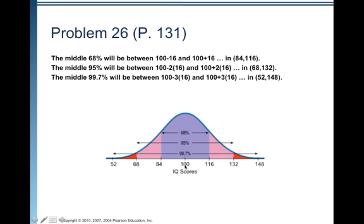In the center, you want to put the mean value, so 100. You do want to make sure you label the horizontal axis there, so we do have IQ scores.